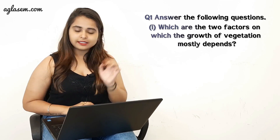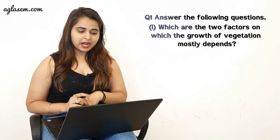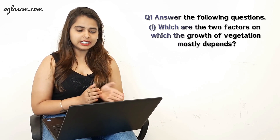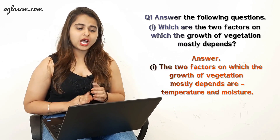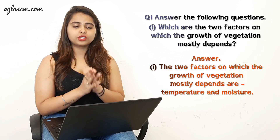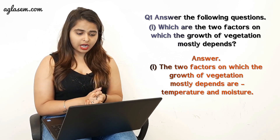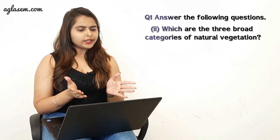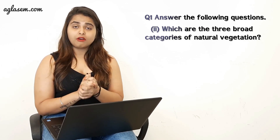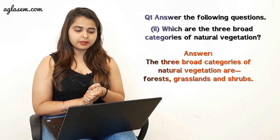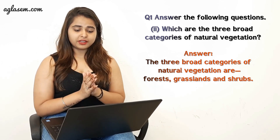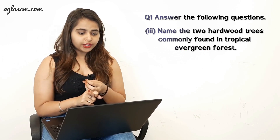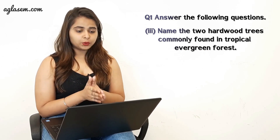Moving towards the exercise of this chapter, the first question asks: which are the two factors on which the growth of vegetation mostly depends? The answer is temperature and moisture. The second part asks: what are the three broad categories of natural vegetation? The answer is forests, grasslands, and shrubs.